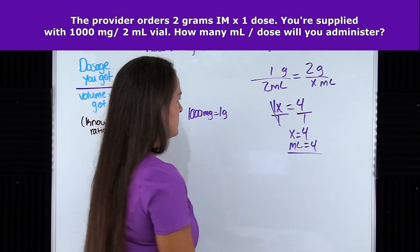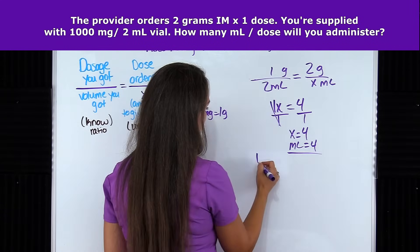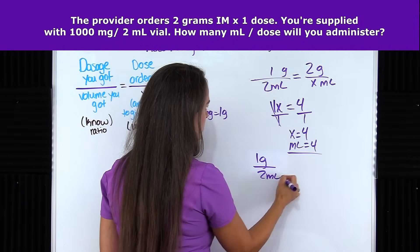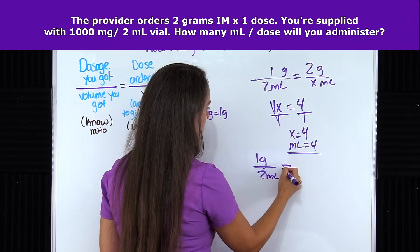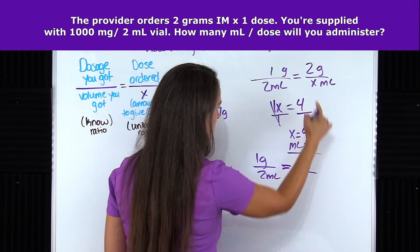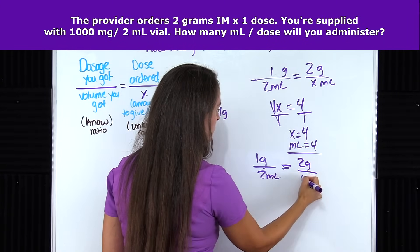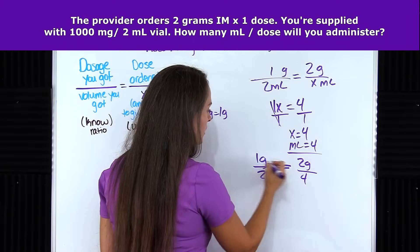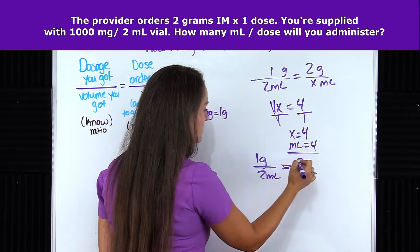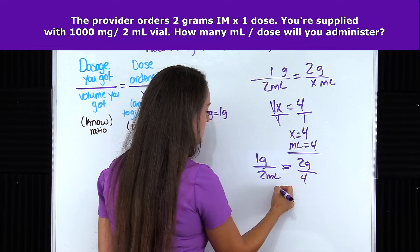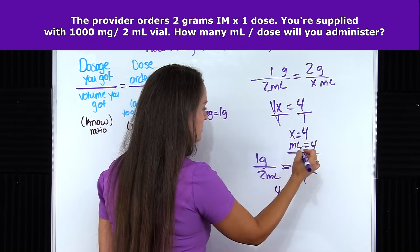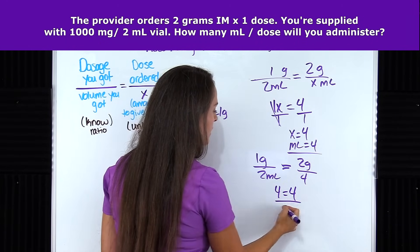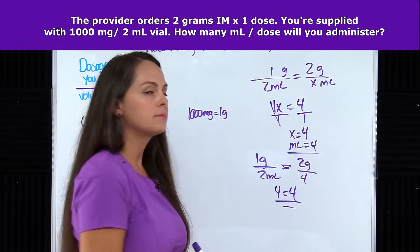Let me quickly rewrite this and plug in 4. Cross multiplying everything: 4 times 1 is 4, and 2 times 2 is 4. They are equal. So this problem is correct.